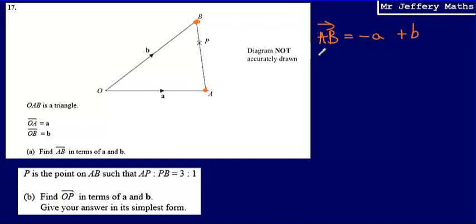So for part A, nice and simple, the vector AB is equal to negative a plus b. We could also write that as b minus a.